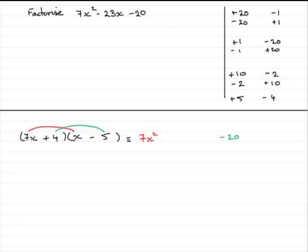Just check out the x terms now. 7x times minus 5, that's going to be minus 35x. And 4 times x is going to be plus 4x. So this is giving us minus 31x.